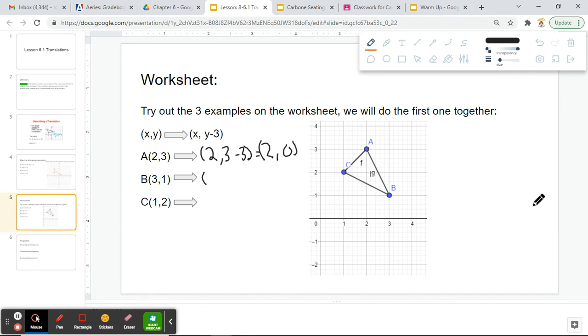For my B coordinate, my x is going to stay the same, originally 3, it's going to stay 3. My y is going to go to 1 minus 3, which would become (3, -2).